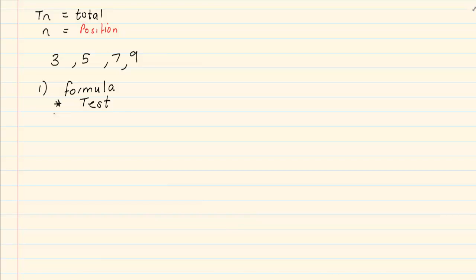So when we are doing the test, we will see that it is arithmetic and you will get the following formula: TN is equal to 2N plus 1. Now the second thing that they would ask you or the second question is find the value of the 50th term.